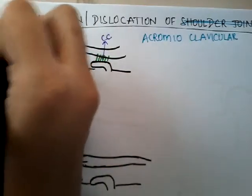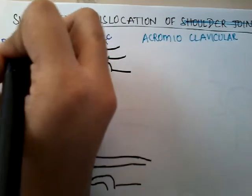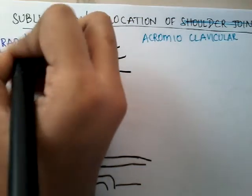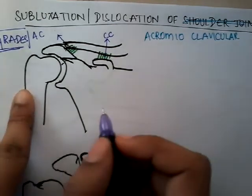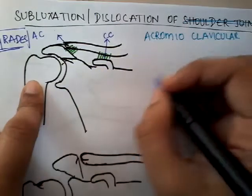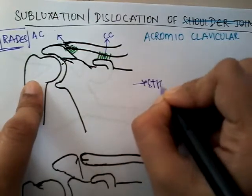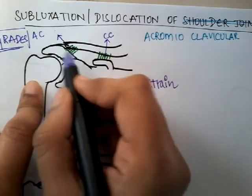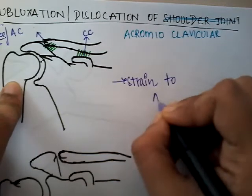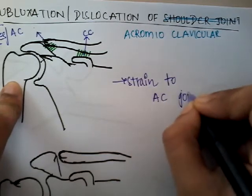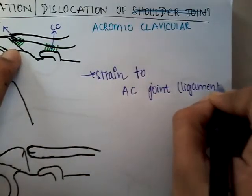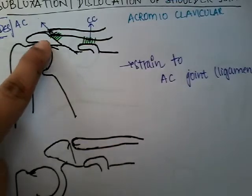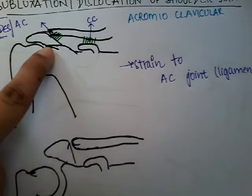There are three grades of acromioclavicular joint dislocation. In grade 1, there is no rupture but just a minimal strain to the acromioclavicular joint — specifically, strain only to the acromioclavicular ligament. There is only strain.